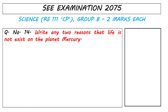Hello, SEE Examination 2075. For science, solving group B equations, let's solve question number 14. Write any two reasons that life does not exist on the planet Mercury.